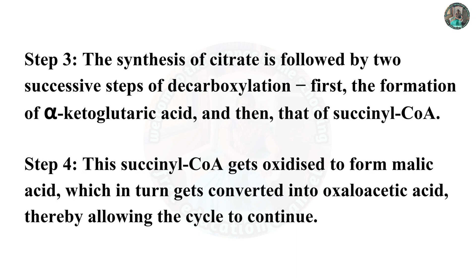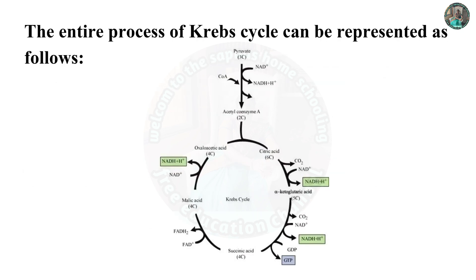Step 4: Succinyl-CoA gets oxidized to form malic acid, which in turn gets converted into oxaloacetic acid, thereby allowing the cycle to continue. The entire process of the Krebs cycle can be represented as follows.